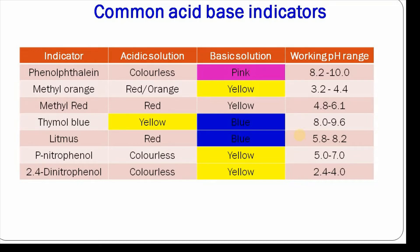The second most widely used indicator is methyl orange which is orange or red in acidic solution and yellow in basic solution and its working pH range is 3.2 to 4.4. Third is methyl red which is red in acidic solution and yellow in basic solution and its working pH is 4.8 to 6.1 and so on.